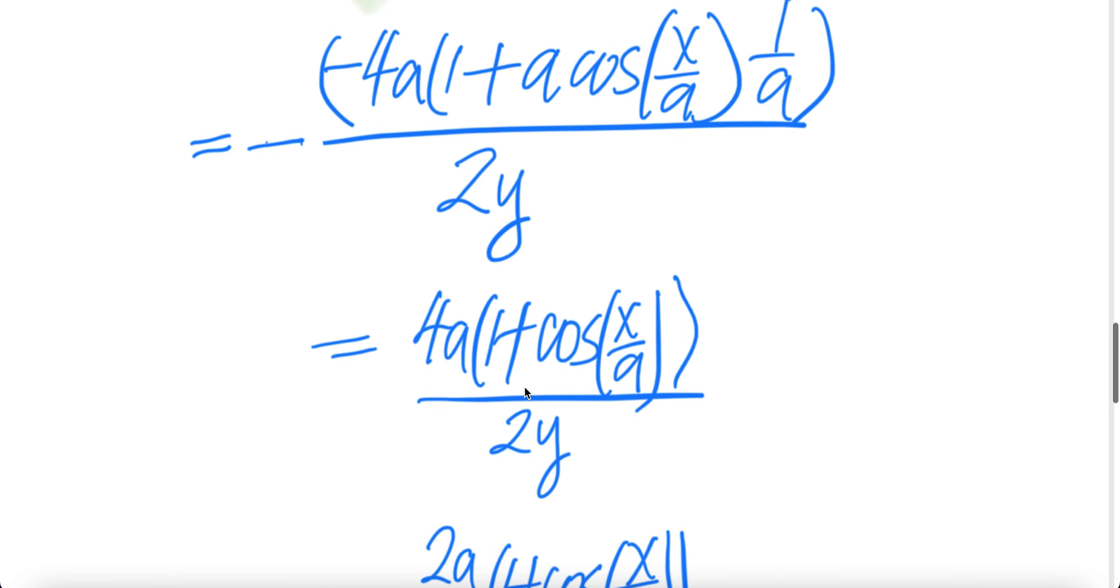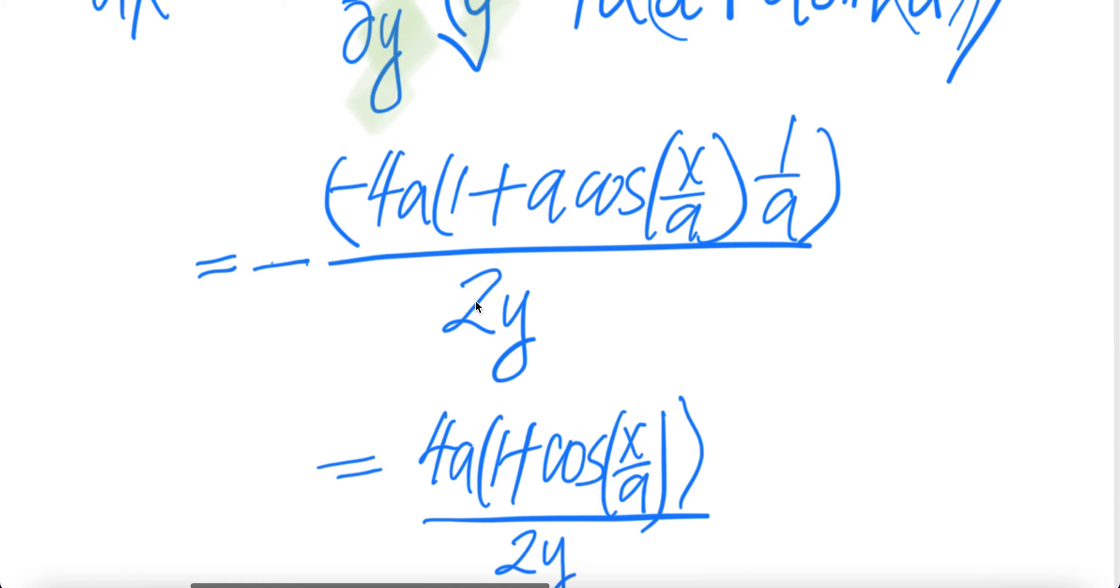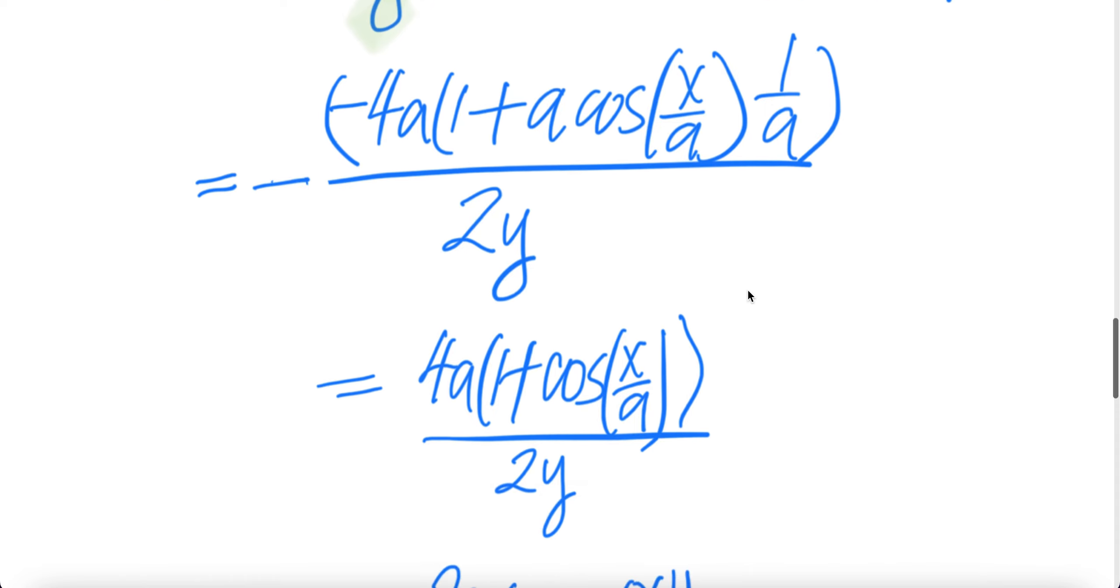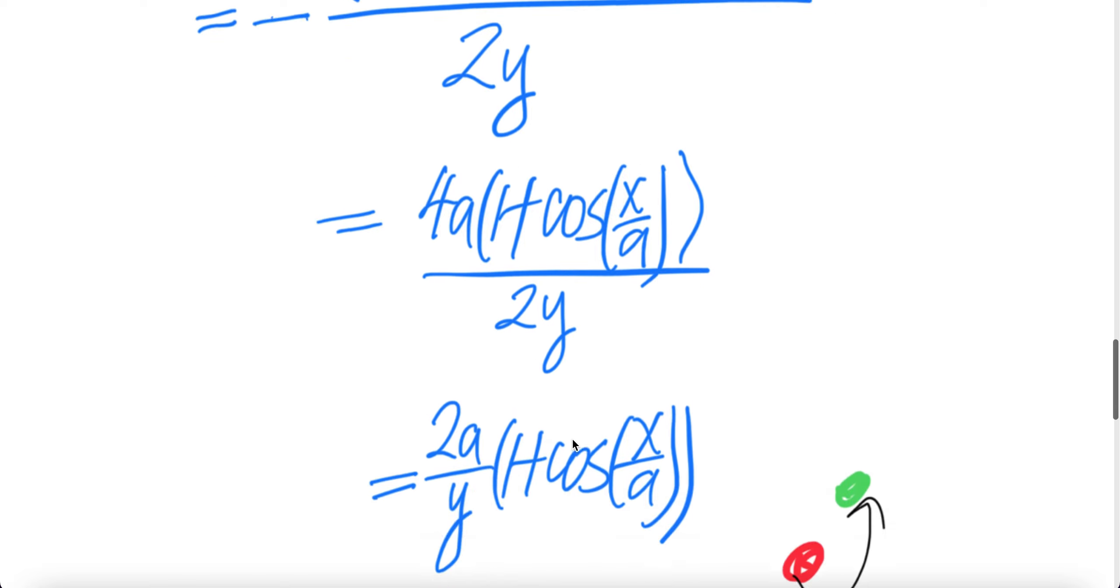So your answer is it will be 2y. So a and a cancel, you get minus the minus positive, you get 4a. This piece will get cos x over a because a and a cancel over 2y.